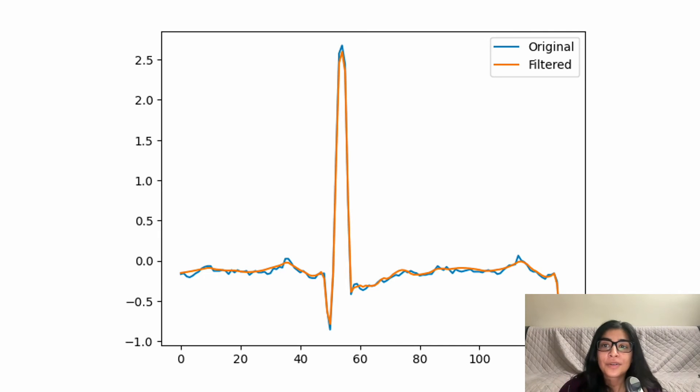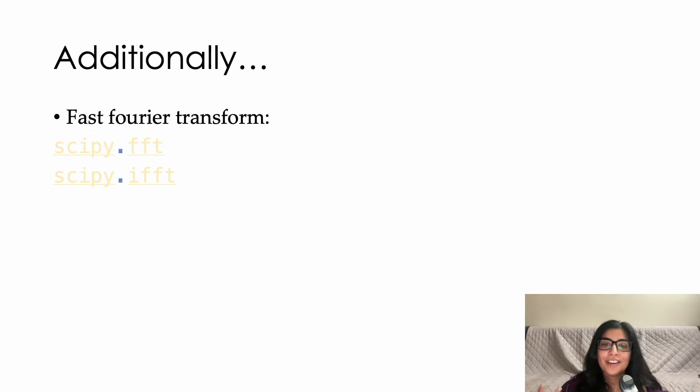So beyond things like filtering, there's so much more we can do in Python that are really correlated to the kinds of functionality we see in MATLAB. One is the fast Fourier transform. And I think this is a very classic type of application that I use all the time. And that's actually in SciPy itself. So you don't have to go into another library. And you can import FFT to do the fast Fourier transform and IFFT for the inverse.